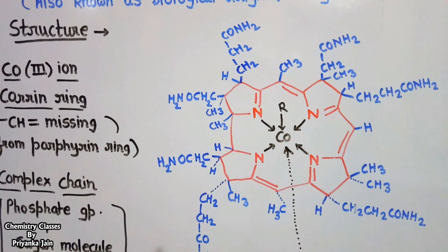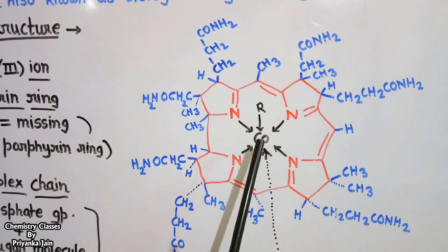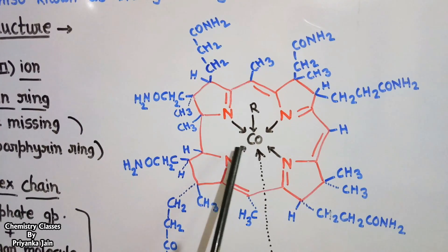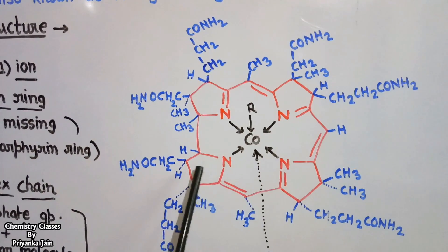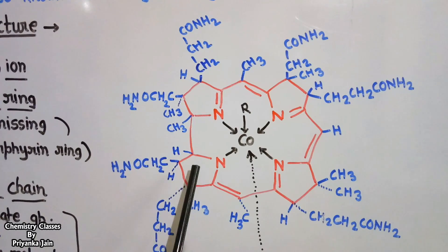It is known as the biological Grignard reagent. Now we come to the structure of vitamin B12. Vitamin B12 is a complex of cobalt, so there is a cobalt ion in the center of this molecule. The cobalt is in the +3 oxidation state and is surrounded by a ring. That is a corin ring. It is not a porphyrin ring, it is a corin ring.